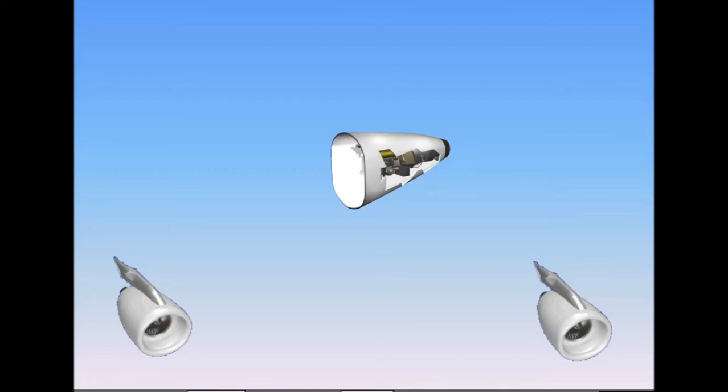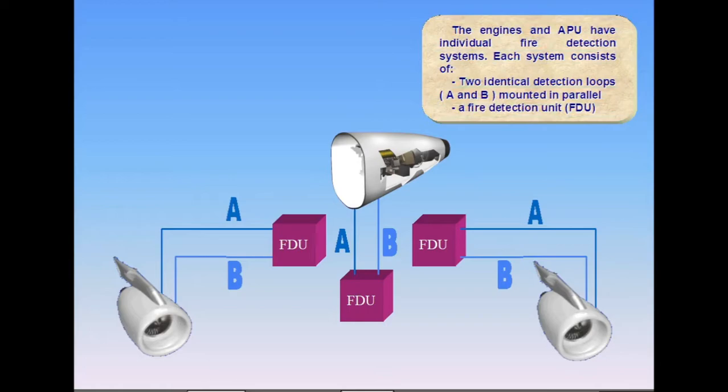The engines and APU have individual fire detection systems. Each system consists of two identical detection loops, A and B, mounted in parallel, and a fire detection unit, FDU.